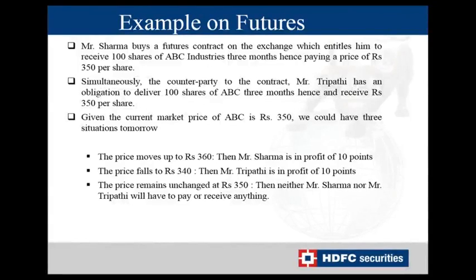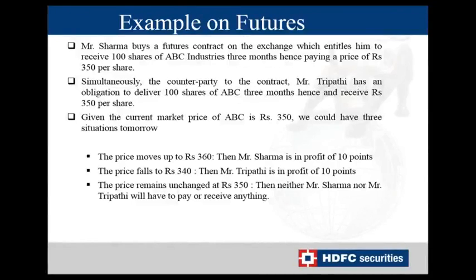There can be only three scenarios tomorrow. If the contract goes from 350 to 360, Mr. Sharma who bought at 350 is in a profitable position of 10 points, whereas Mr. Tripathi loses 10 points. If the stock falls to 340, Mr. Sharma loses 10 points but Mr. Tripathi gains 10 points since he sold at 350. The third scenario is that the price remains unchanged at 350 — in this case, neither Mr. Sharma nor Mr. Tripathi pays or receives anything as the price has not moved.